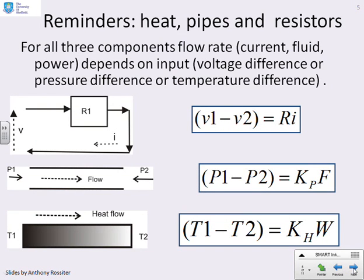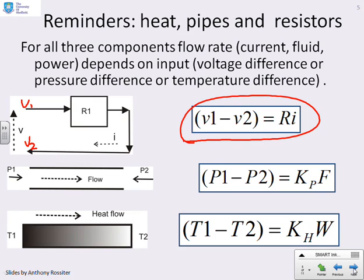Let's remind you of the equations from the first few videos. For a single resistor with voltage difference V1 minus V2, the model is V1 minus V2 equals resistance R times current I. For a single pipe with pressure difference P1 minus P2, we get pipe resistance Kp times the flow rate F. And for a conductor with temperature difference T1 minus T2, that equals the effective resistance to heat flow KH times W, the power going through that conductor.